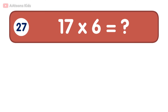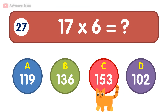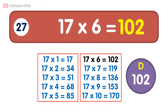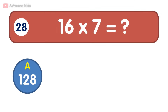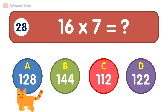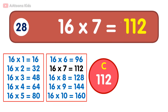17 times 6 is equal to 102. 16 times 7 is 112.